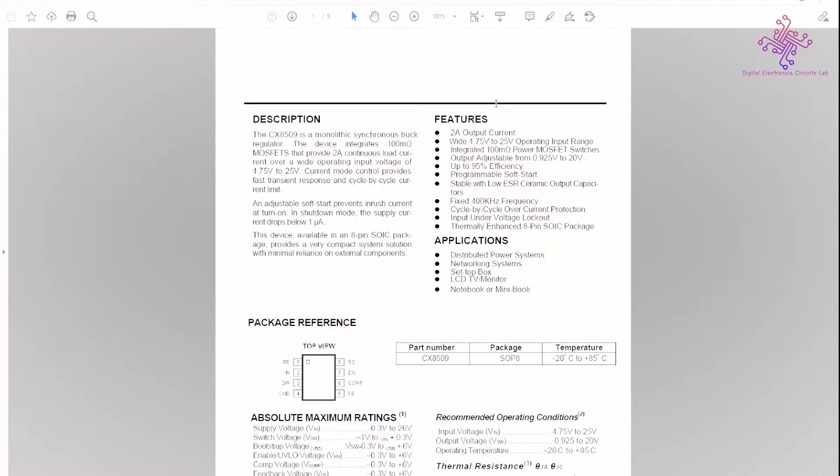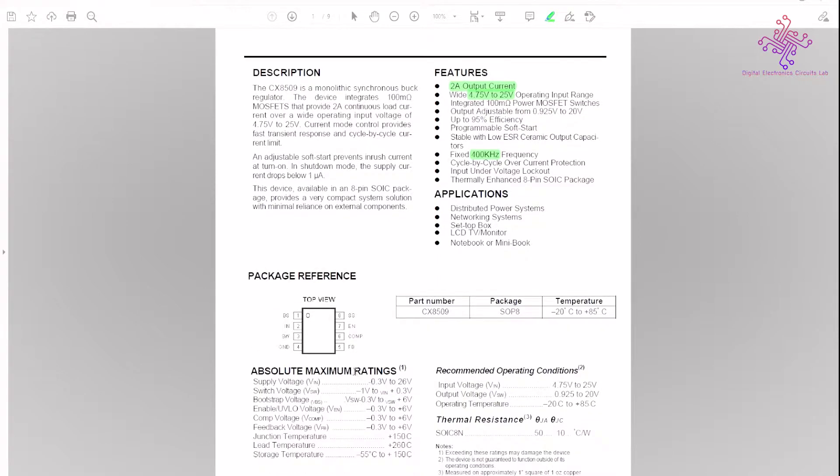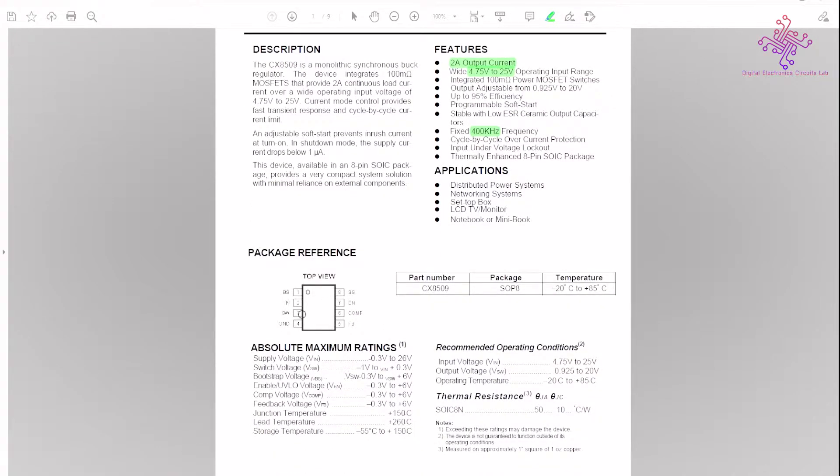This device is capable of handling 2 amps of continuous output current and a wide input voltage of 4.75 to 25 volts. Since it is a buck regulator, we definitely need a higher voltage than 5 volts. It also has an integrated MOSFET which switches at a fixed frequency of 400 kilohertz.